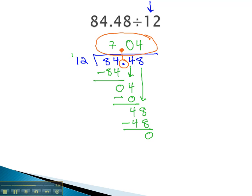To divide a decimal by a whole number, we simply divide using long division, and then move the decimal straight up into our final answer.